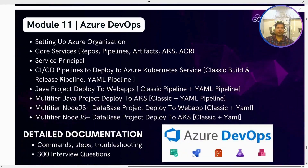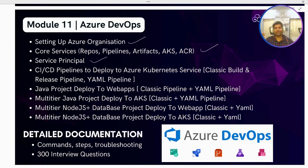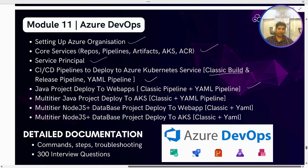The Azure DevOps module covers understanding Azure DevOps versus Azure Cloud, setting up an organization, core services — Repos, Pipelines, Artifacts, AKS, and ACR. We'll use Service Principals for authentication since that's the real-time approach to limiting permissions. We'll create CI/CD pipelines to deploy to AKS using both Classic Build & Release and YAML pipelines, deploy a Java project to Web Apps using both pipeline types, and deploy multi-tier applications with Java and Node.js.